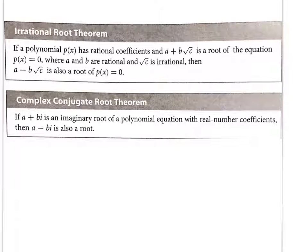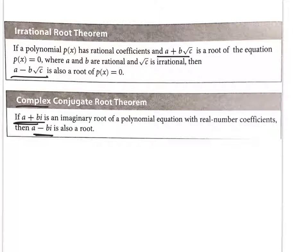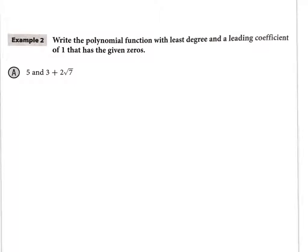The Irrational Root Theorem says if a + b√c is a root, then a − b√c is also a root — you always get conjugates. Similarly for imaginary numbers: if a + bi is a root, then a − bi is always also a root. Whenever you get polynomial answers with radicals or with i, they will always come in conjugate pairs.